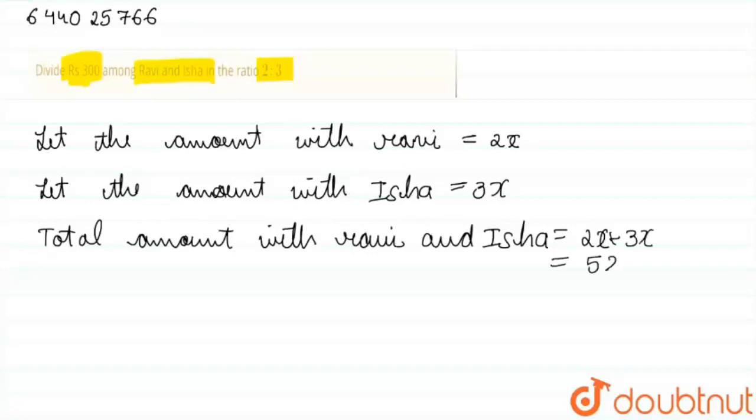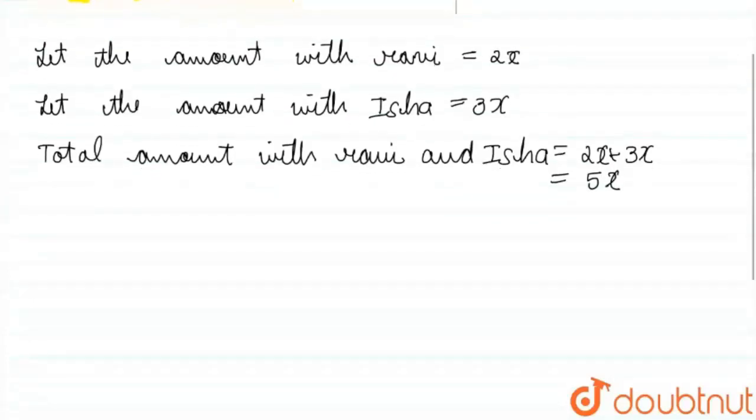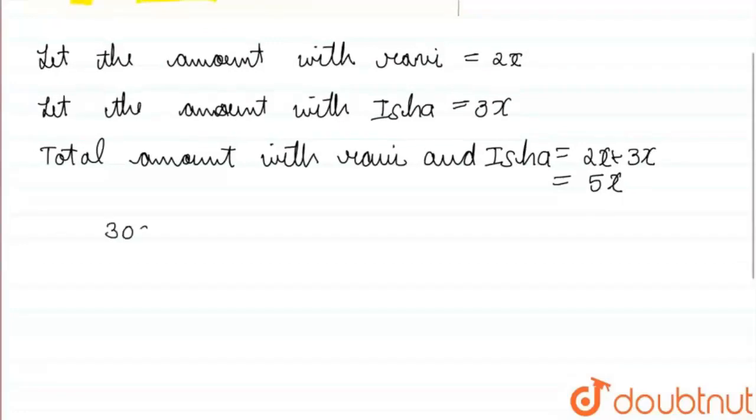Okay, so after that, the total amount given is 300, so 300 will be equals to 5x. So the value of x will be 300 by 5, that will be equal to 60.